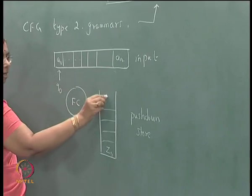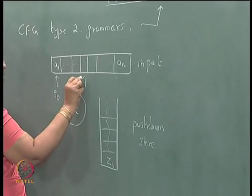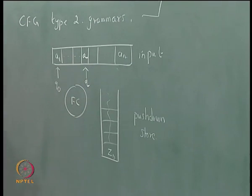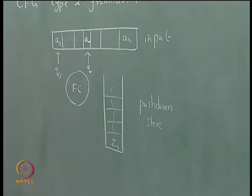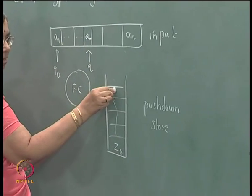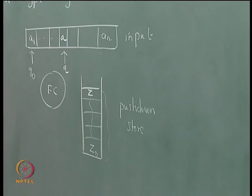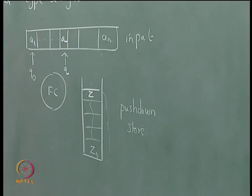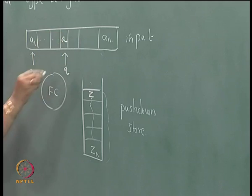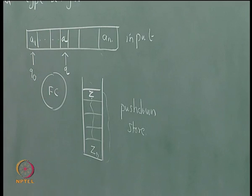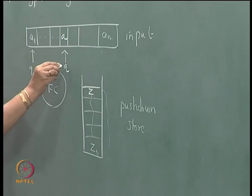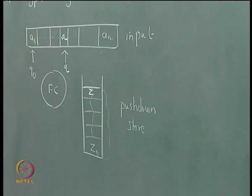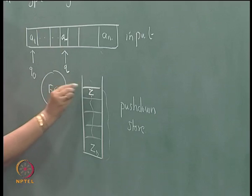After some time you may have something on the stack. In some state Q it is reading a symbol A, and at that time the stack is having some symbols — the topmost symbol is Z. The next move depends on Q, A, and Z. In the case of finite state automaton, knowing Q and A the next move is determined. But in the case of pushdown automaton, knowing Q, A, and Z the next state is determined.